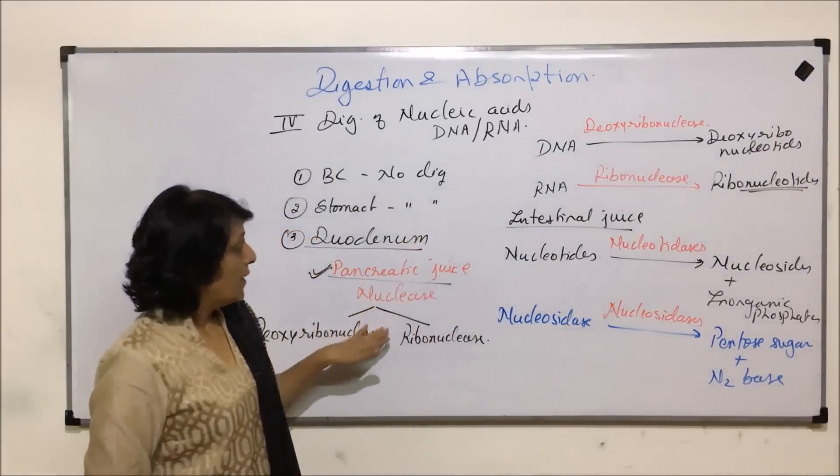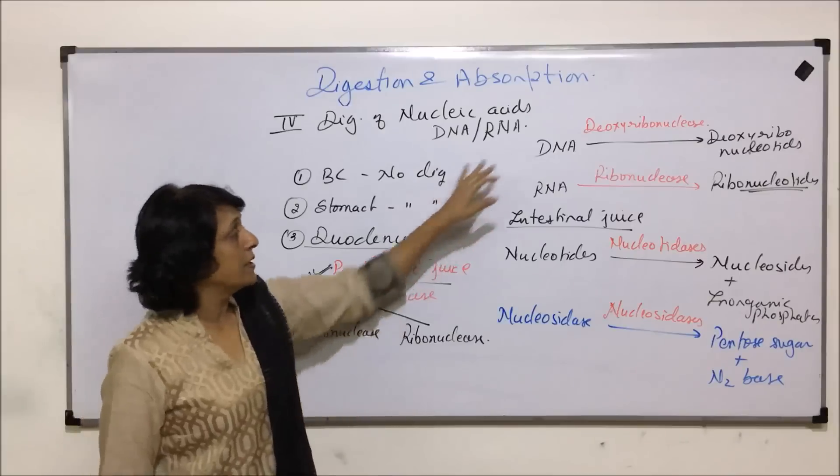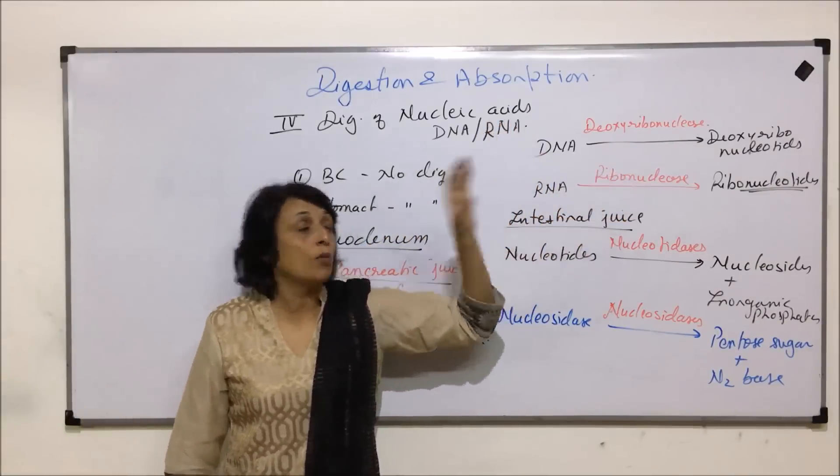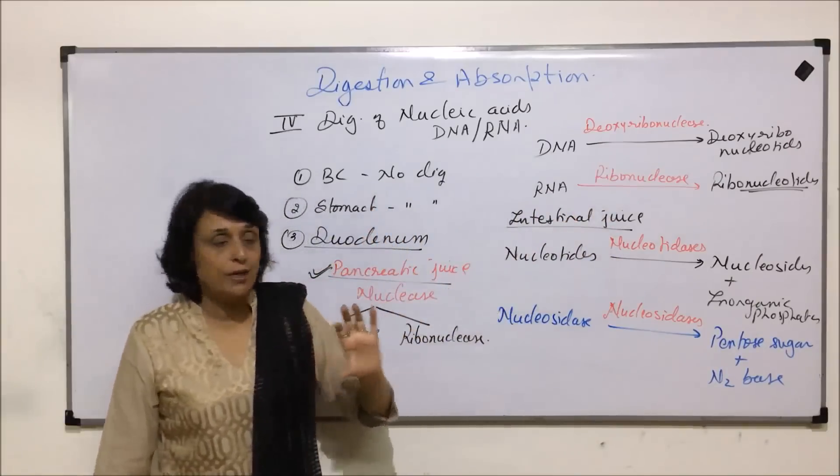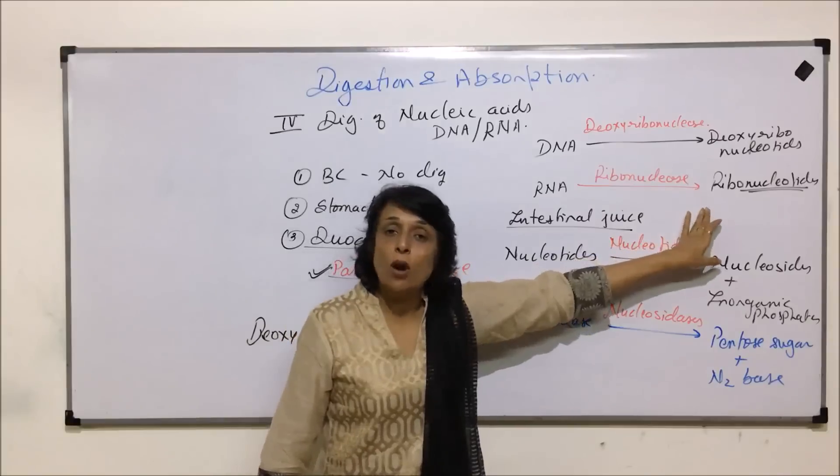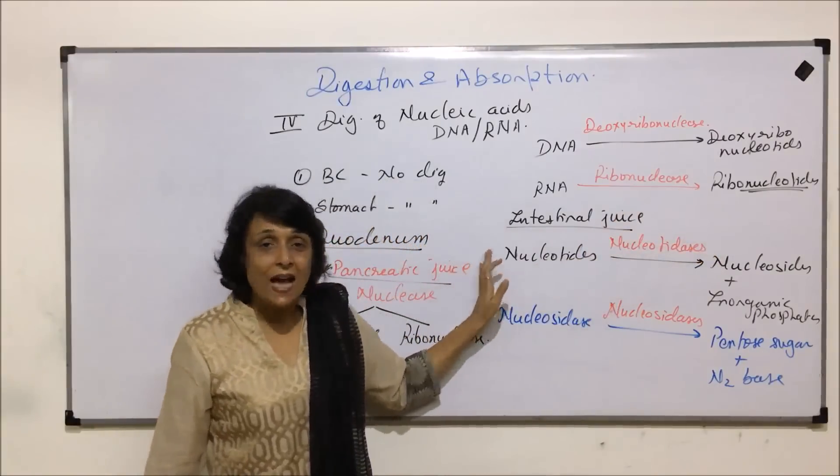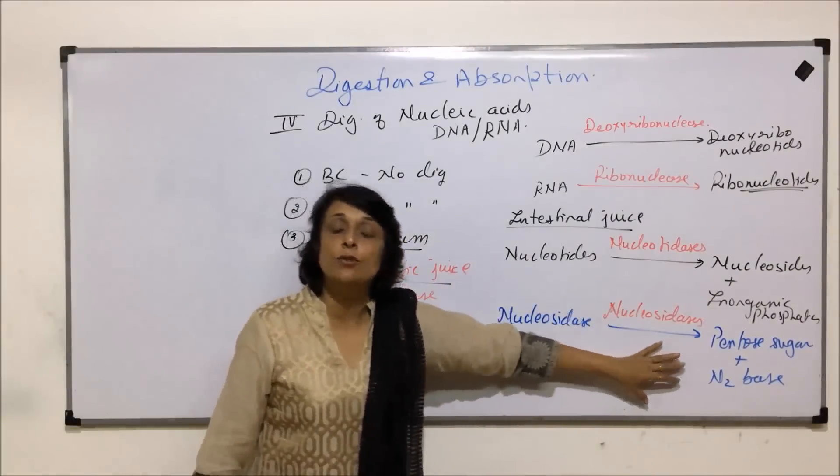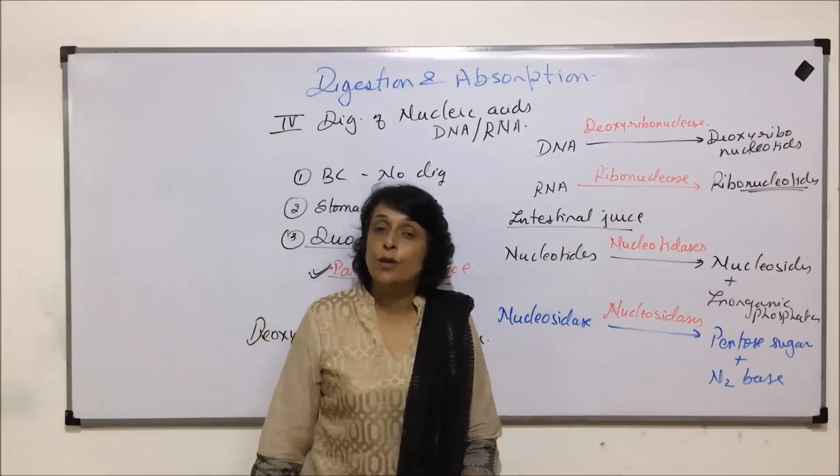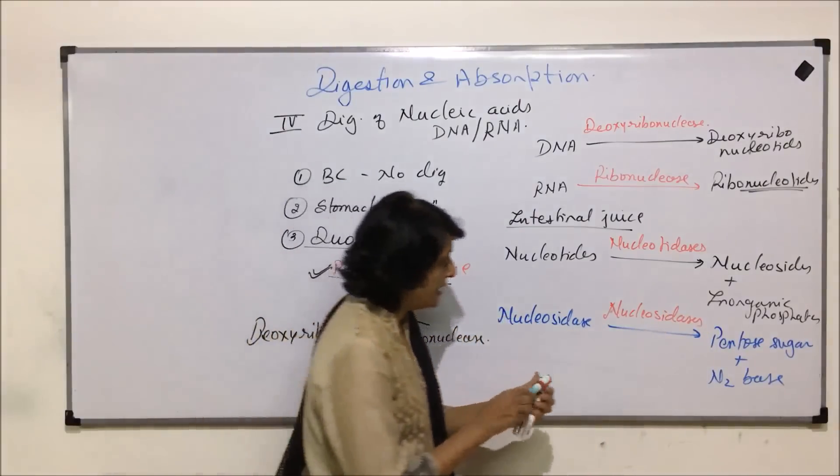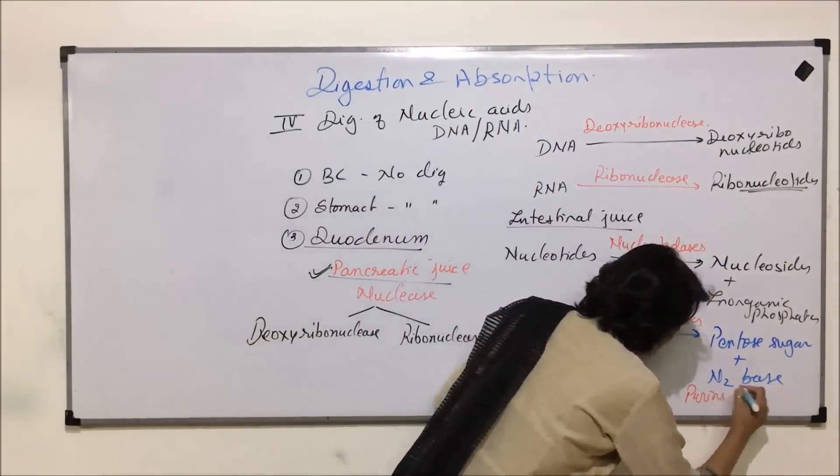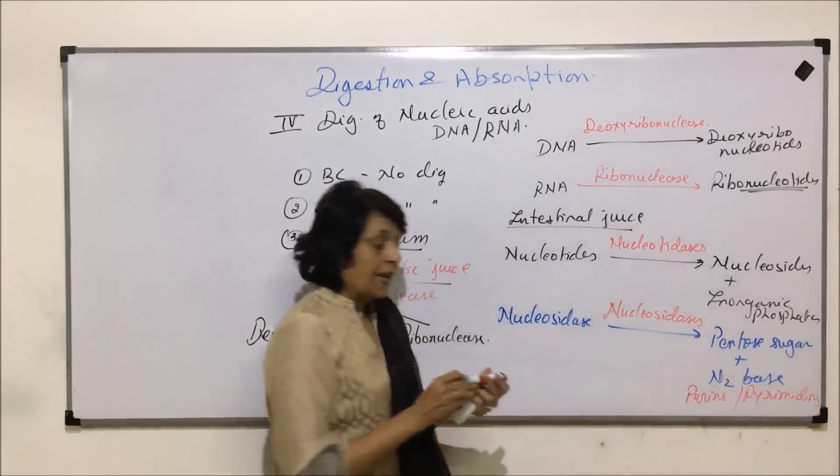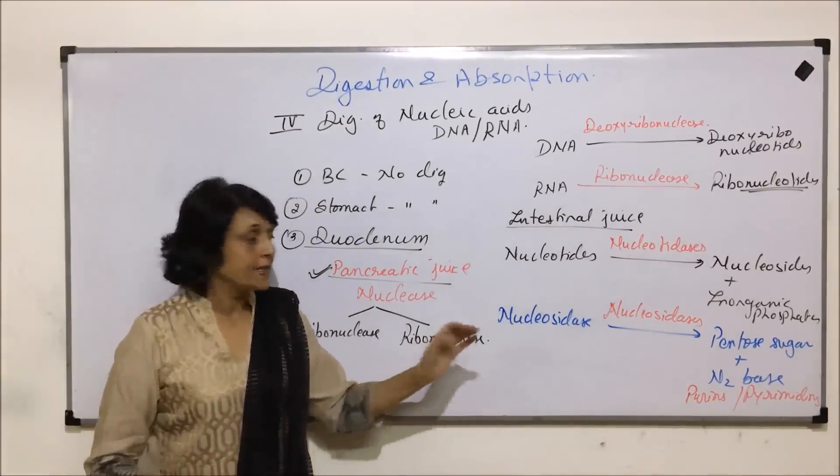So ultimately, DNA and RNA, the nucleic acids are acted upon by enzymes to be broken down into monomer units. These monomer units are called nucleotides. Nucleotides are then broken down into nucleosides and phosphate. Then nucleosides into the final end product, that is pentose sugar and nitrogen base. And these nitrogen bases are purines and pyrimidines. So nucleic acids are also broken down.